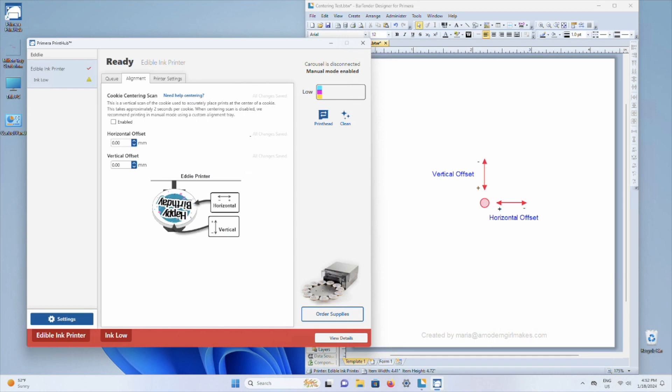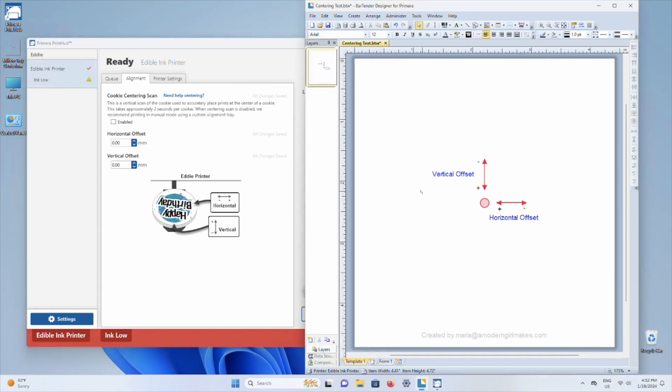So that's what we need here in the Primera print hub. The next thing that I'm going to direct you to is Bartender, where I have opened up a template. This is the template that I put the link to in the video description, and it is already set up for the most current Milton tray, 4.41 inches and 4.72 inches. This is ready to go and ready to print. So the next thing I'm going to do is make sure that my printer is ready to do the test print.